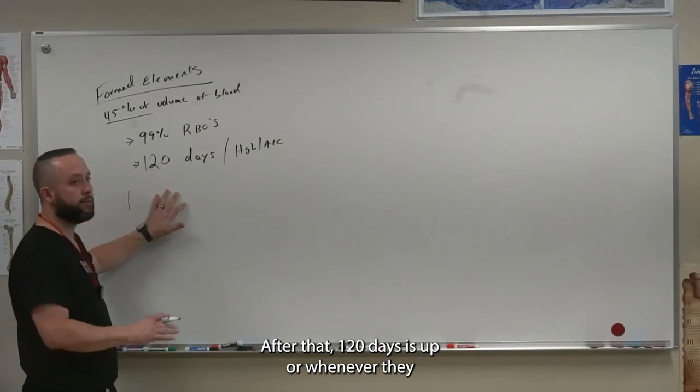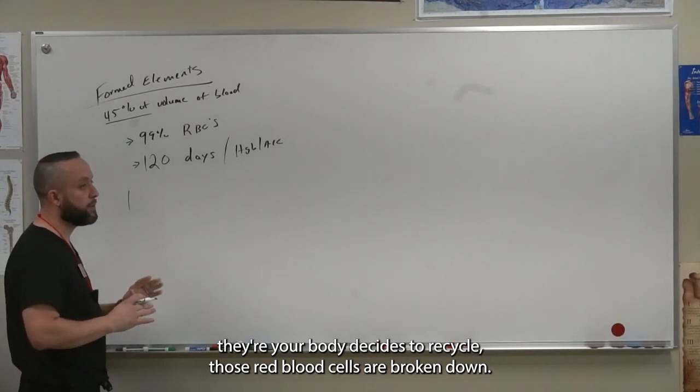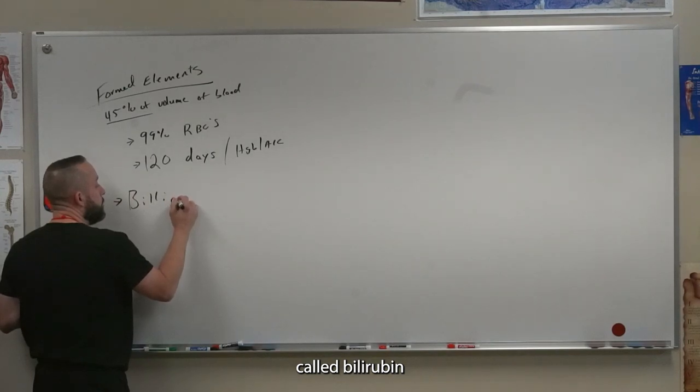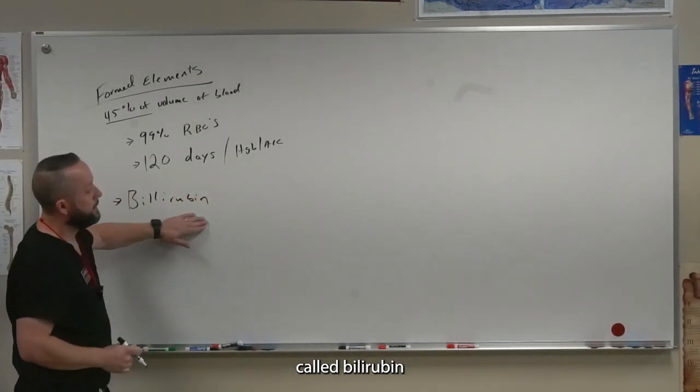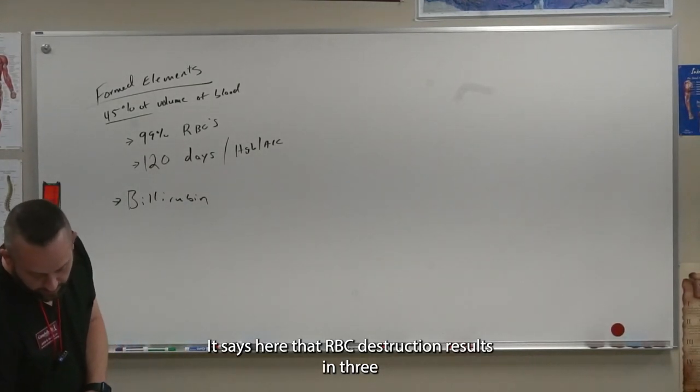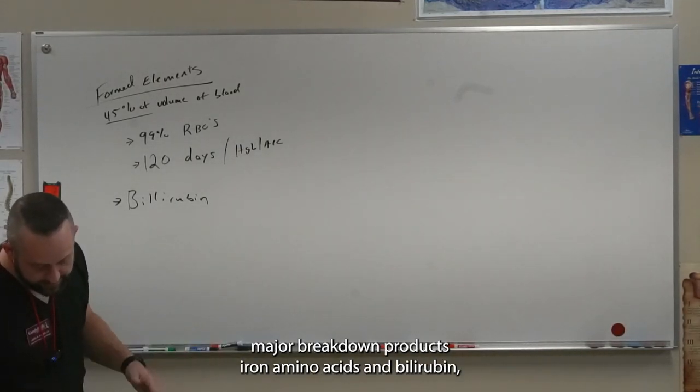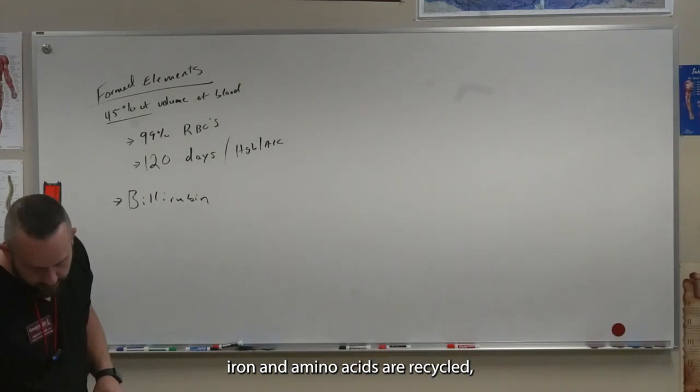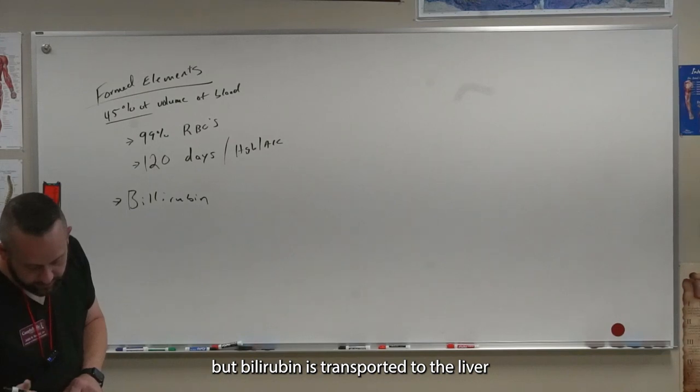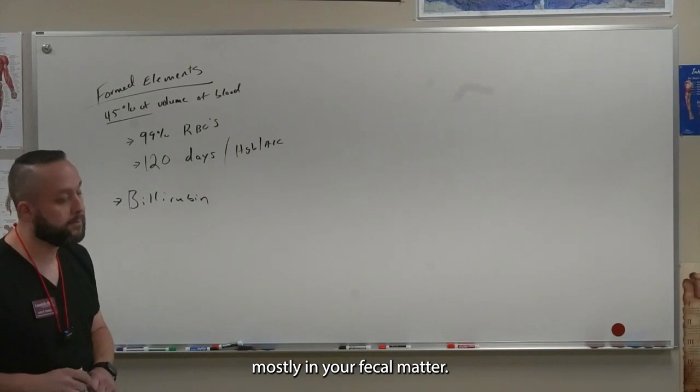After that 120 days is up or whenever your body decides to recycle those red blood cells, they're broken down. Some of the byproducts are called bilirubin. It says here that RBC destruction results in three major breakdown products: iron, amino acids, and bilirubin. Iron and amino acids are recycled but bilirubin is transported to the liver and then probably excreted mostly in your fecal matter.